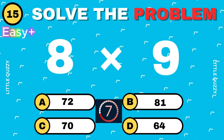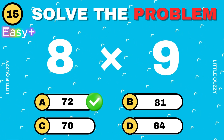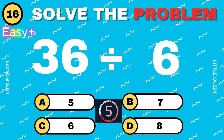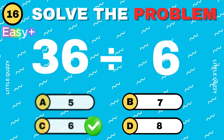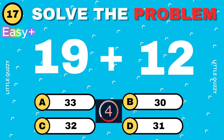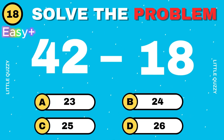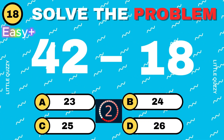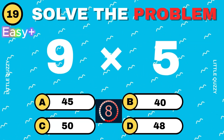What is 8 times 9? The correct answer is 72. What is 36 divided by 6? The correct answer is 6. What is 19 plus 12? The correct answer is 31. What is 42 minus 18? The correct answer is 24.